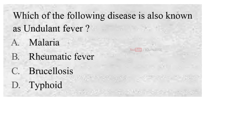Which of the following disease is also known as undulant fever? A. Malaria, B. Rheumatic fever, C. Brucellosis, D. Typhoid. And the correct answer is...